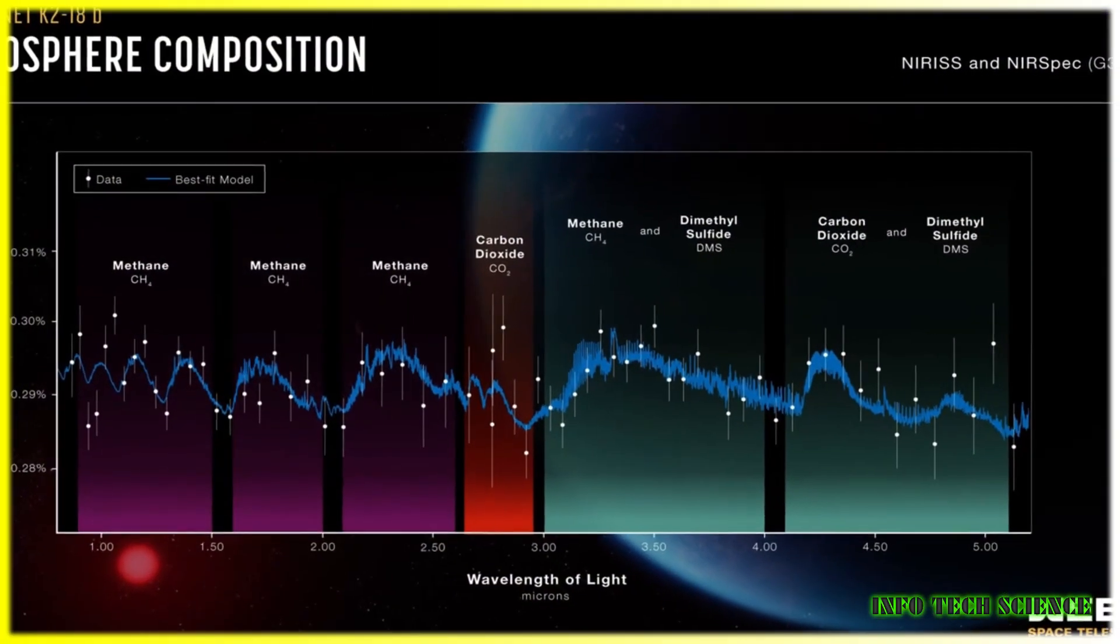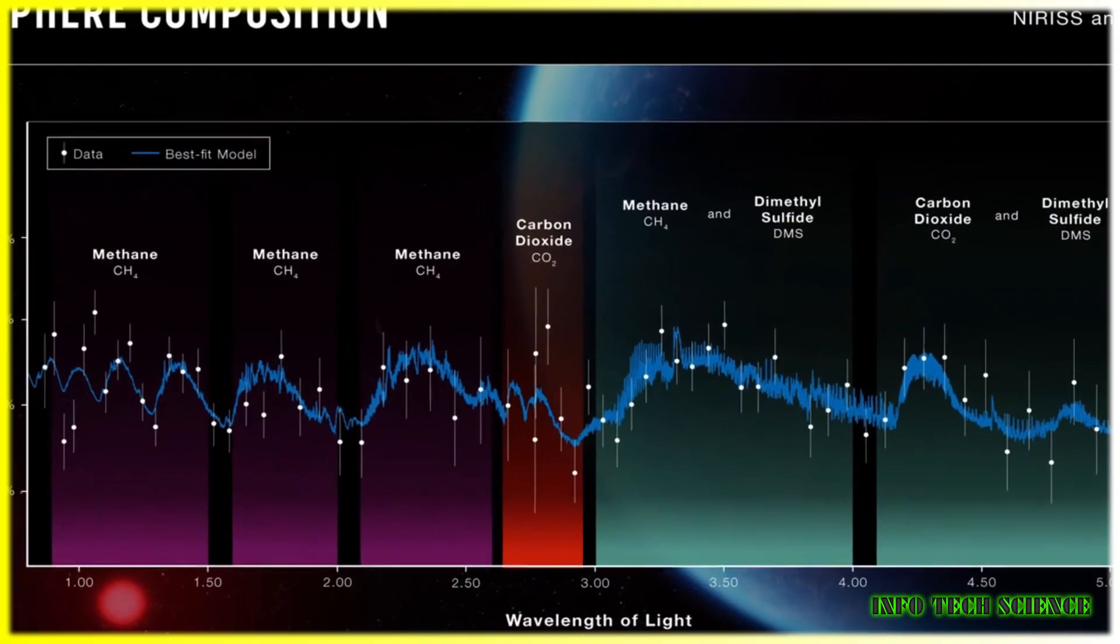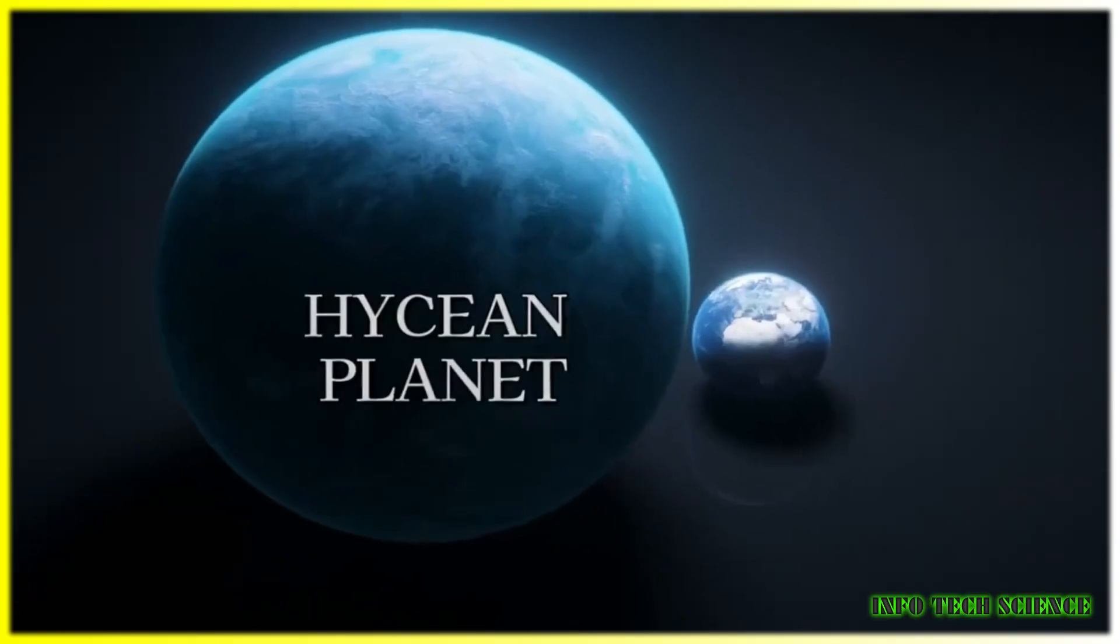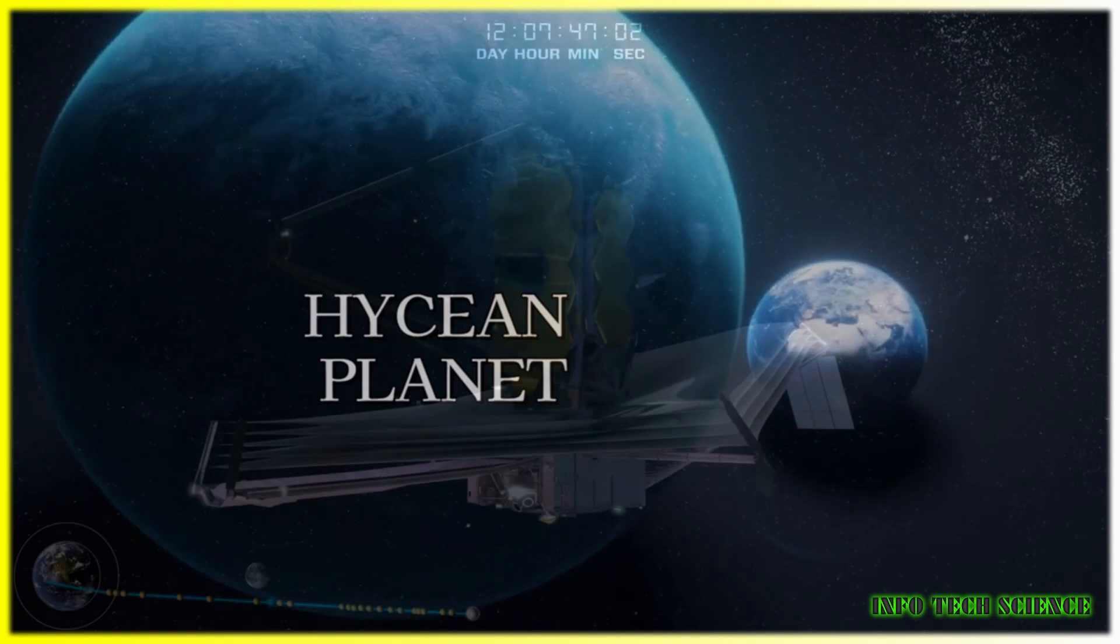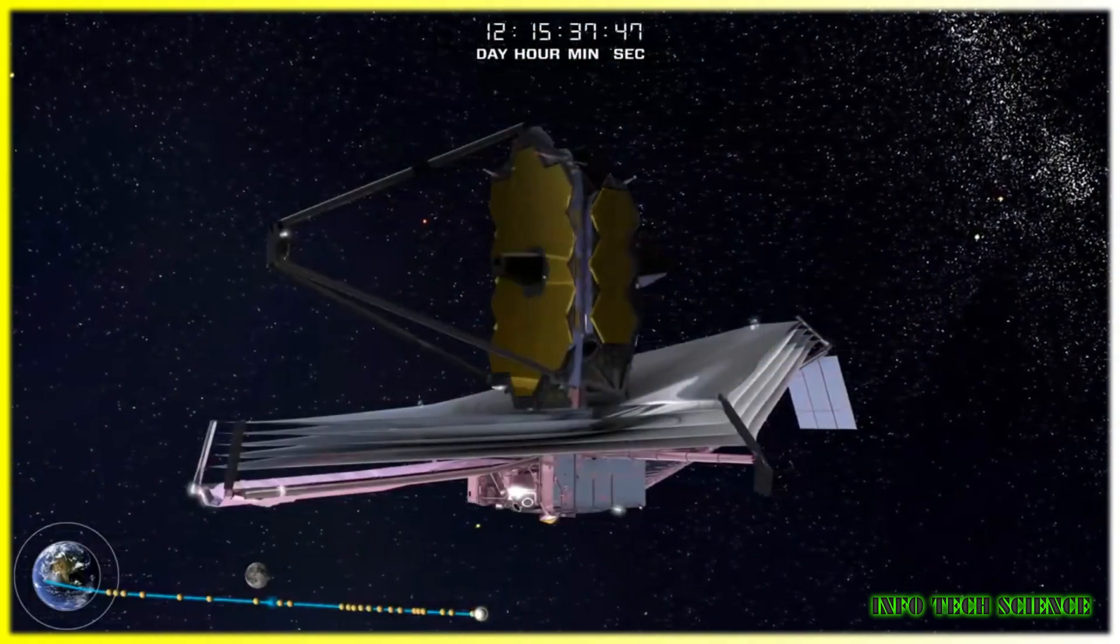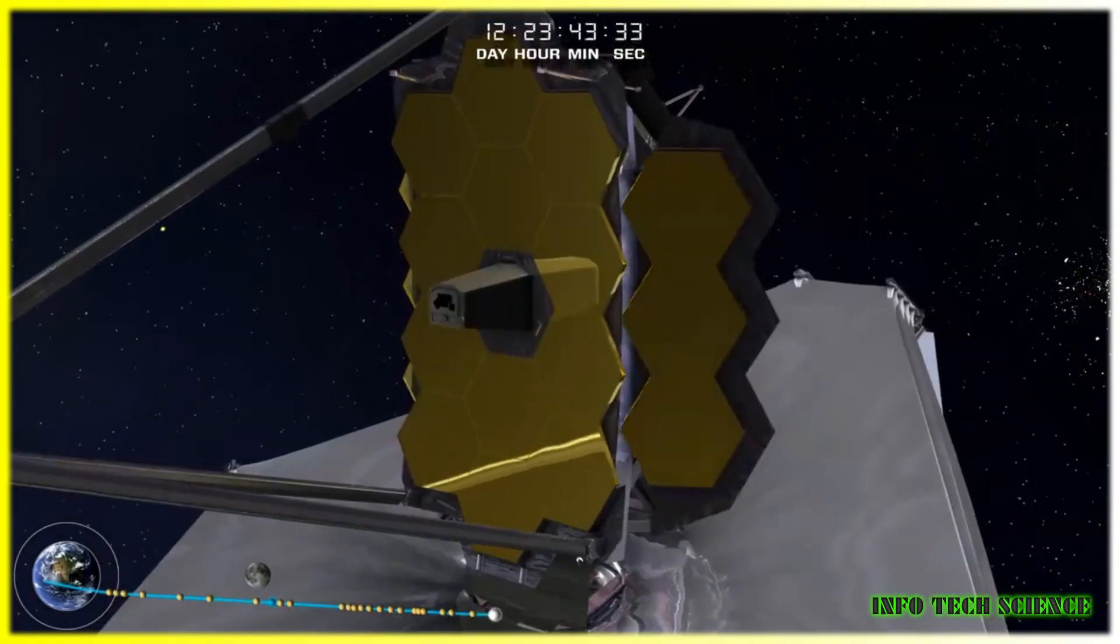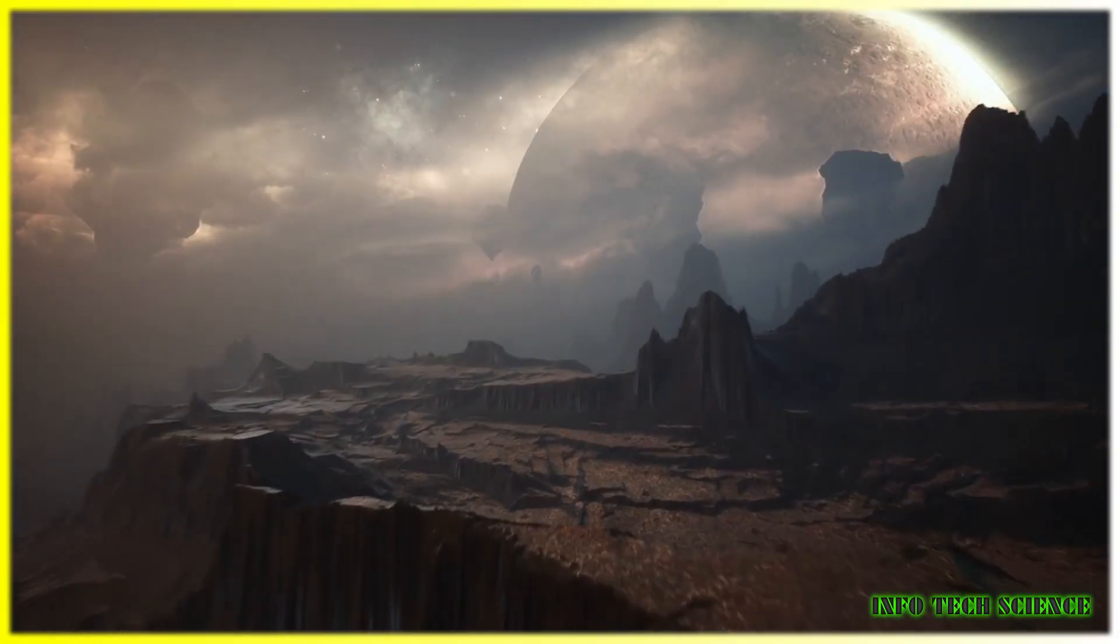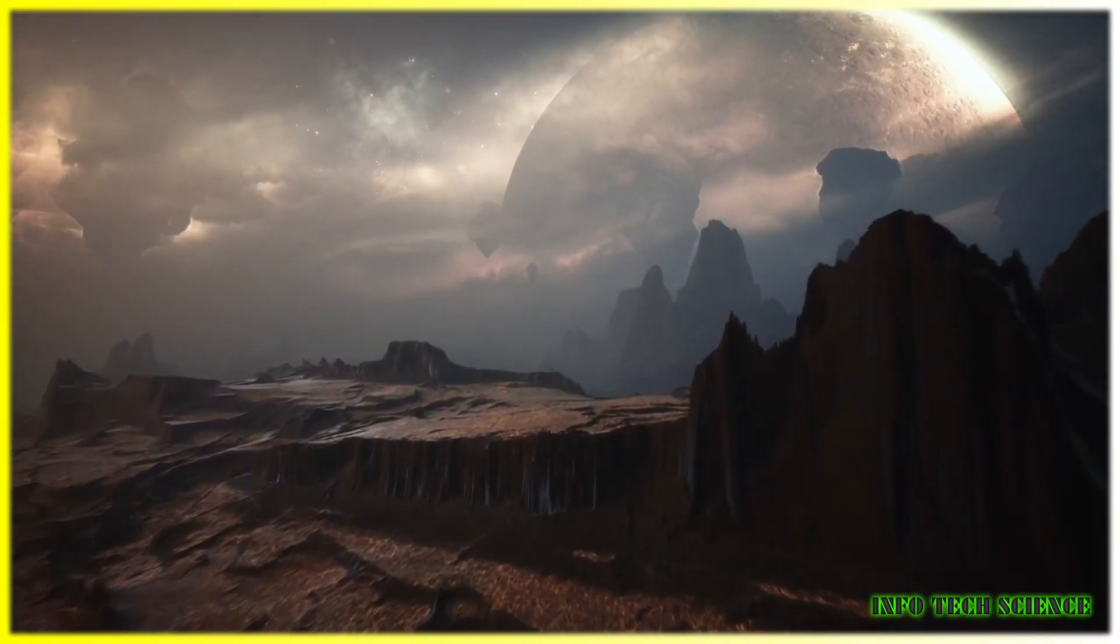The proportions of CO2 and methane are consistent with there being a water ocean underneath a hydrogen-rich atmosphere. NASA's Hubble telescope had detected the presence of water vapor previously, which is why the planet K2-18b was one of the first to be investigated by the vastly more powerful JWST.